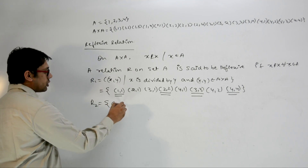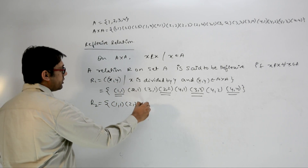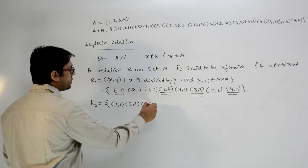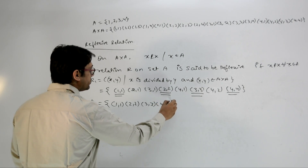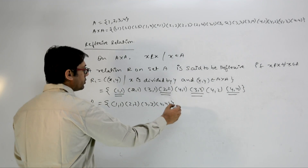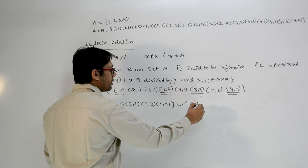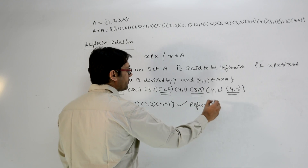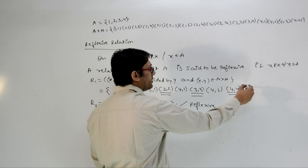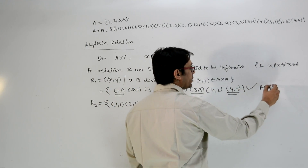Now for all x belonging to set A, the ordered pairs (1,1), (2,2), (3,3), and (4,4) must all be present. These are indeed present in R1, so this relation R1 is reflexive.